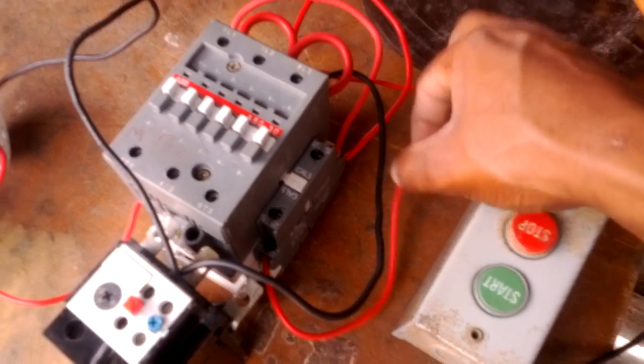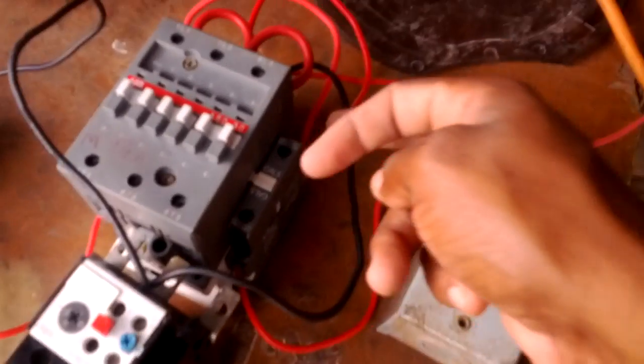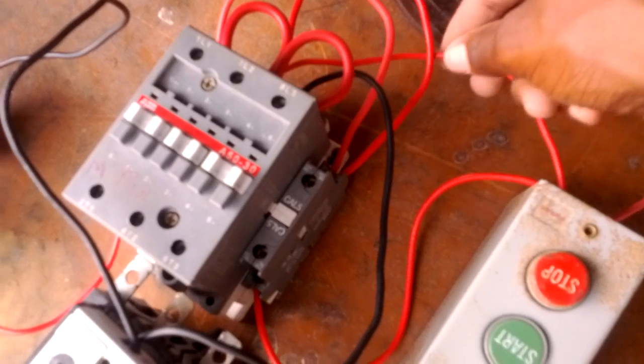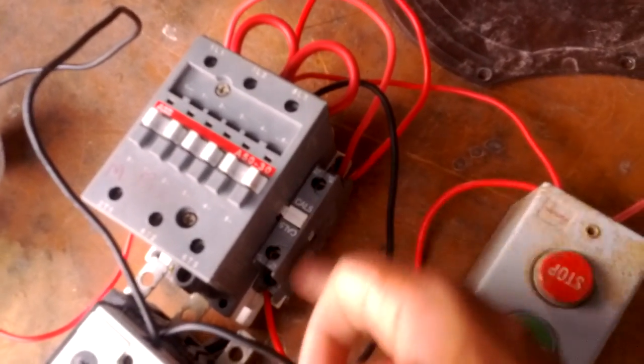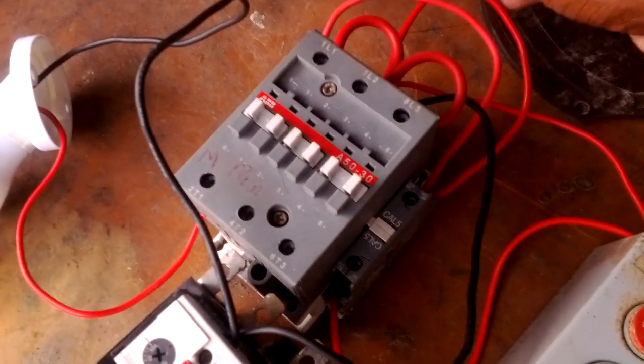The second thing is you take a wire off the normally closed part of your stop button, which is here, and put it to an auxiliary. If you don't get this, you can check my next video about a holding circuit. This part is my holding circuit. For now, I'm just going to demonstrate the procedure of how to do the light itself.